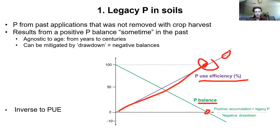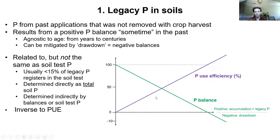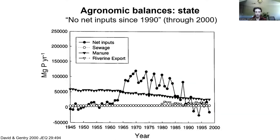PUE can go above 100% if you're mining soil phosphorus — using all the fertilizer plus native phosphorus — which entails a negative balance. A positive balance entails low PUE and thus legacy phosphorus. We can monitor PUE and P balances and therefore legacy P using soil tests or balance calculations. The two main approaches would be using an agronomic balance at different scales from field to state, or using a soil test P trend.